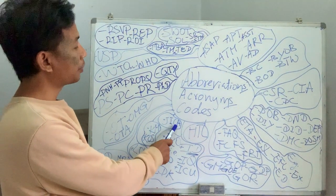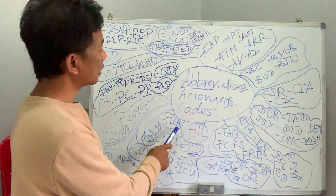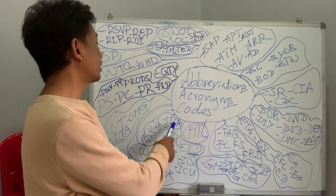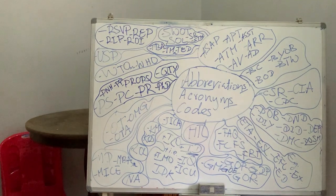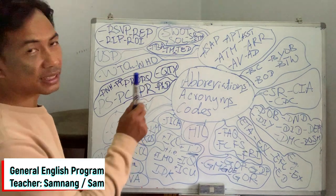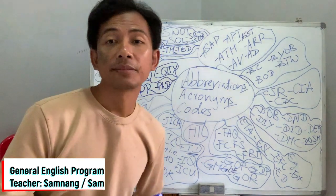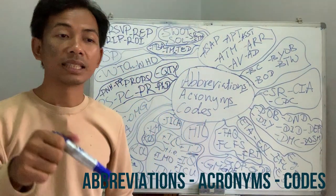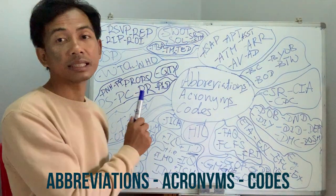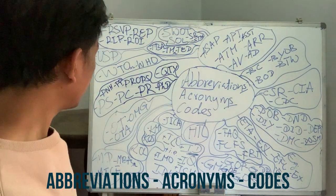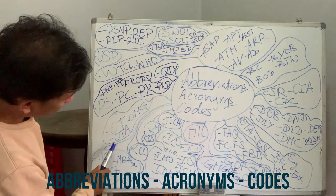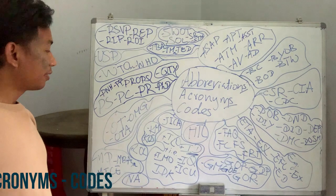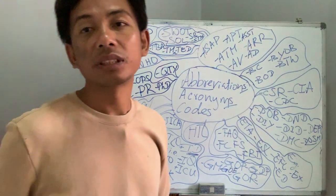KM — kilometers. KOS — also a code. KWE — it stands for Sihanoukville Airport. So if you want to book a flight to Sihanoukville you have to select KWE, and when you fly to KWE you will arrive at Sihanoukville Airport. LOL — laughing out loud.